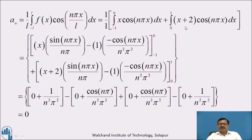For the second integral, taking u = x+2, v = cos(nπx): keep x+2, integrate cos(nπx) = sin(nπx)/(nπ), minus derivative of (x+2) times integral of sin(nπx)/(nπ) = -cos(nπx)/(n²π²), with limit 0 to 1. Putting x=0: sin(0)=0 so first term is 0; cos(0)=1 giving +1/(n²π²). Putting x=-1: sin(-nπ)=0; cos(-nπ) = cos(nπ) = (-1)ⁿ, giving cos(nπ)/(n²π²).